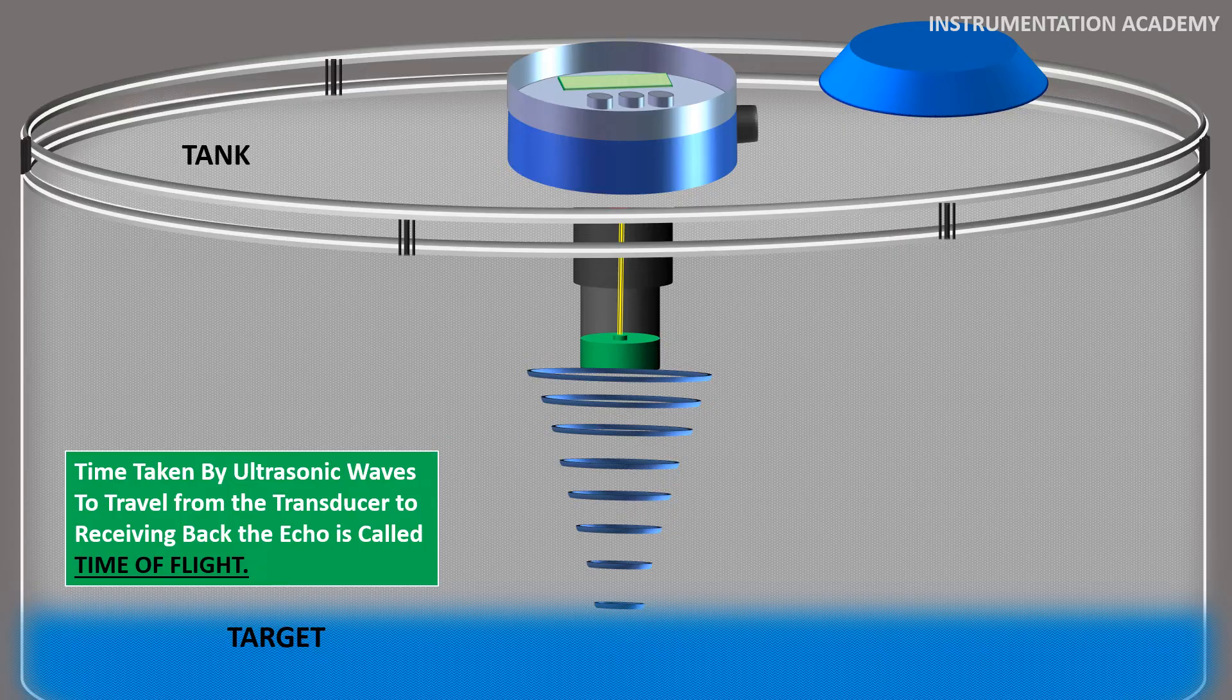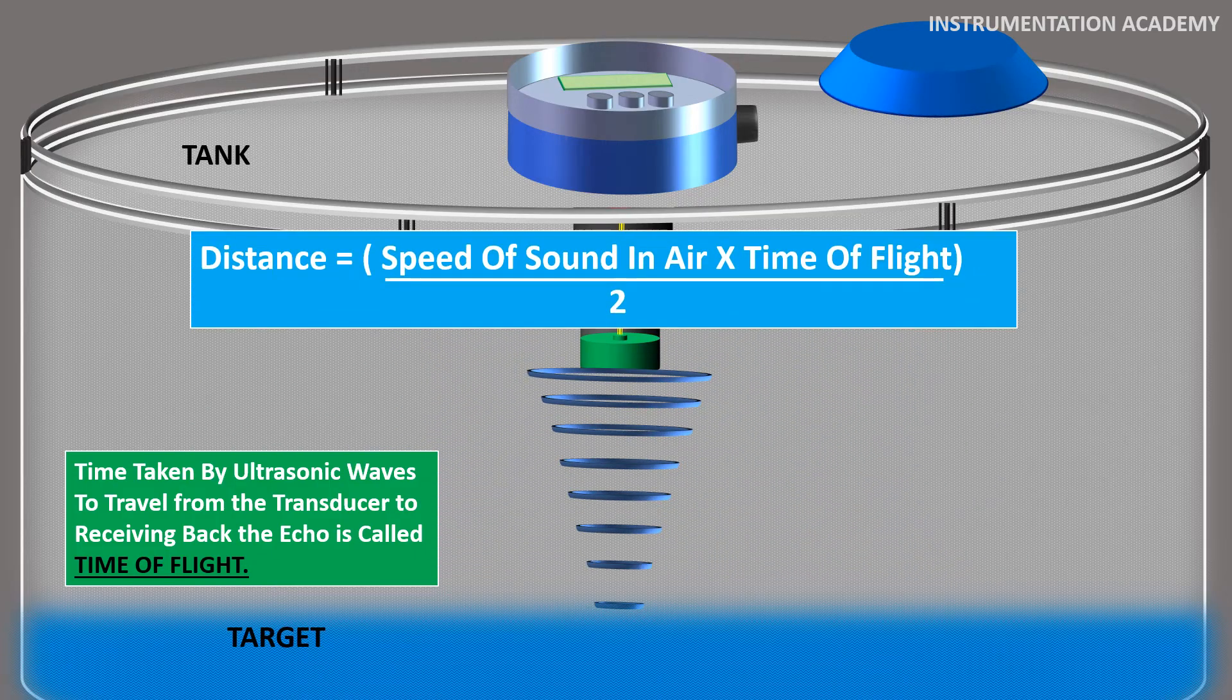Microprocessor now calculates the distance to the target surface from the device using the formula: Distance = (Speed of sound in air × Time delay) / 2.